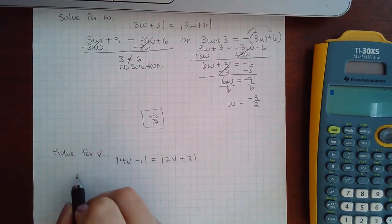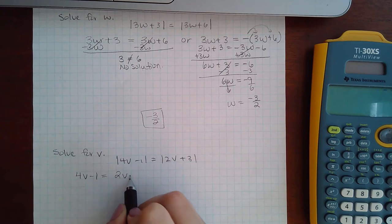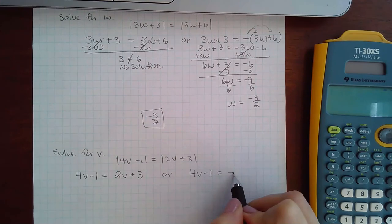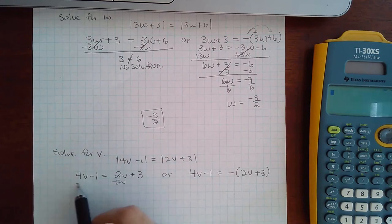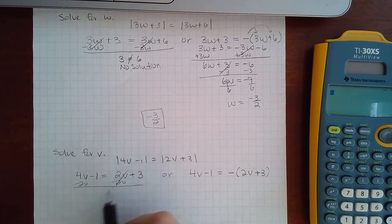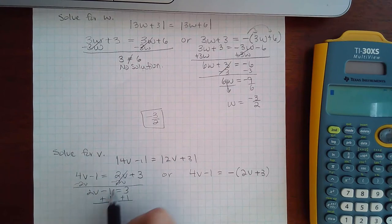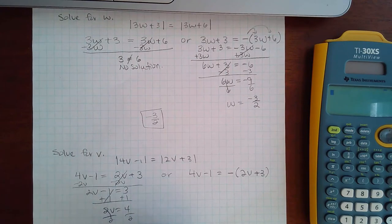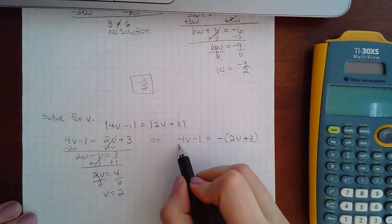Now let's check out this one over here. So we take the positive of this inside equal to this expression exactly as it is, or the left inside equal to the opposite of the right inside. Then here, if I solve this, I get 2v minus 1 equals 3, and I end up with v equal to 2. So I do have a solution there.